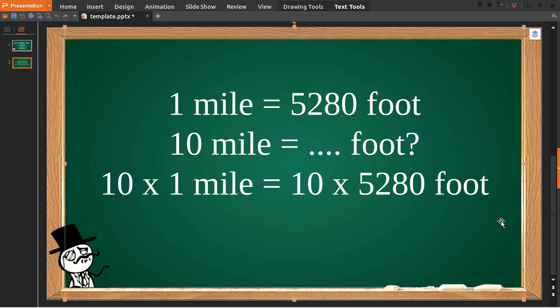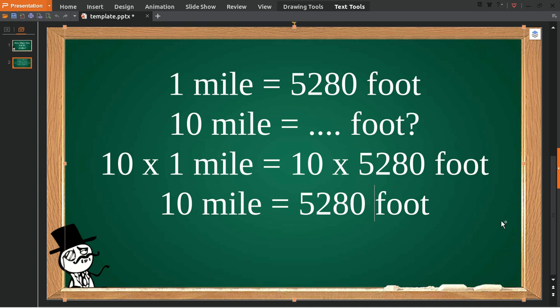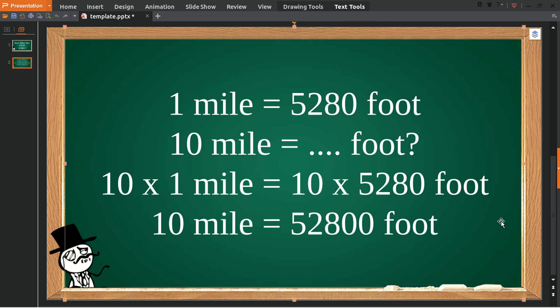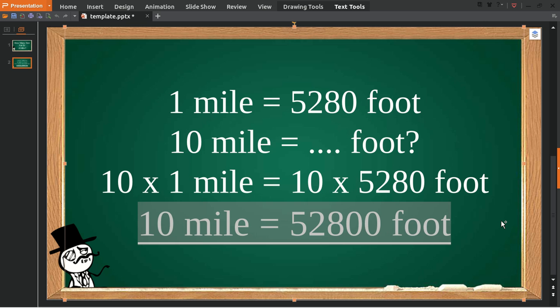10 miles: 10 times 1 is equal to 10, equals 10 times 5,280, which equals 52,800 feet. That's the answer to the question.